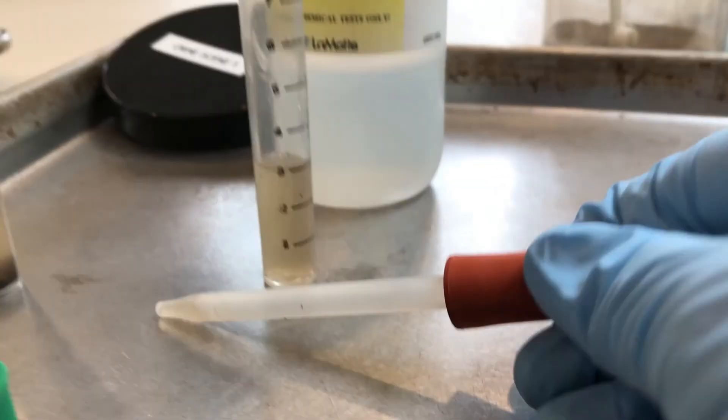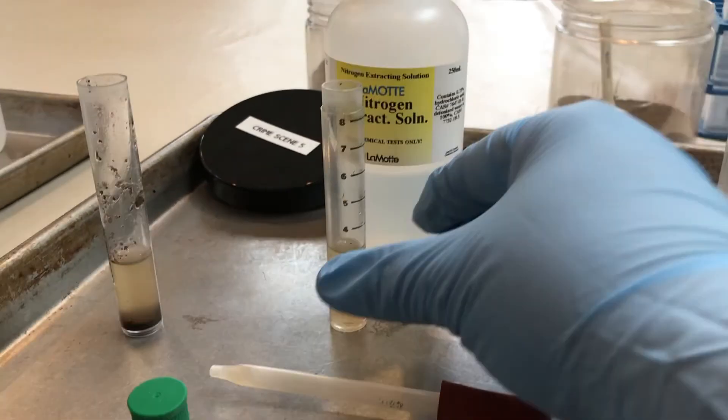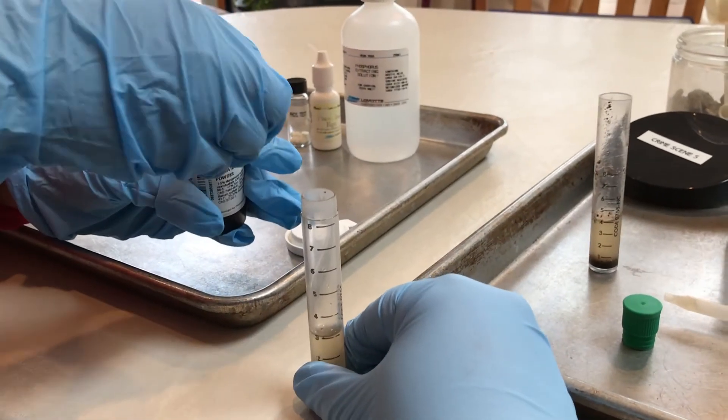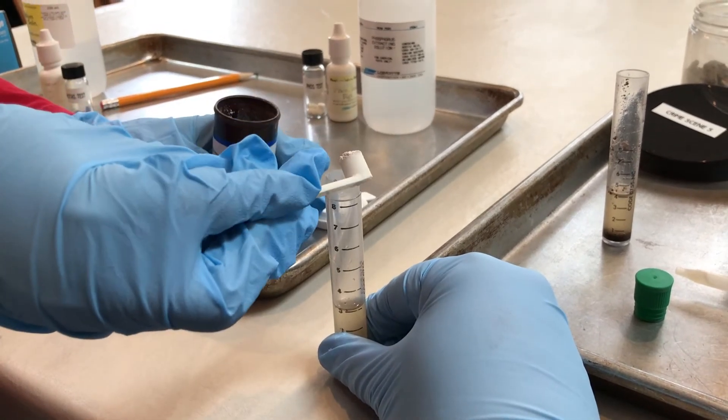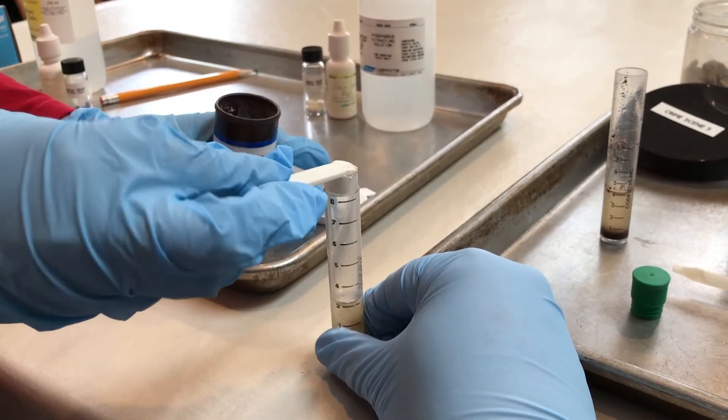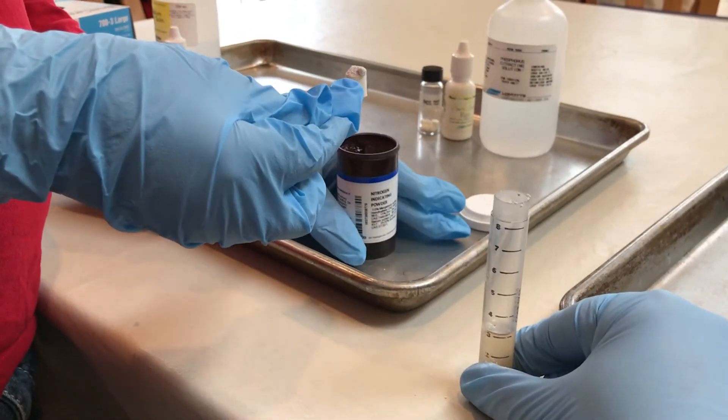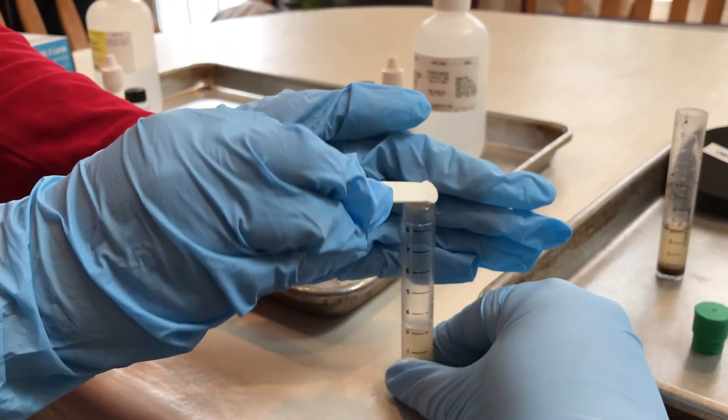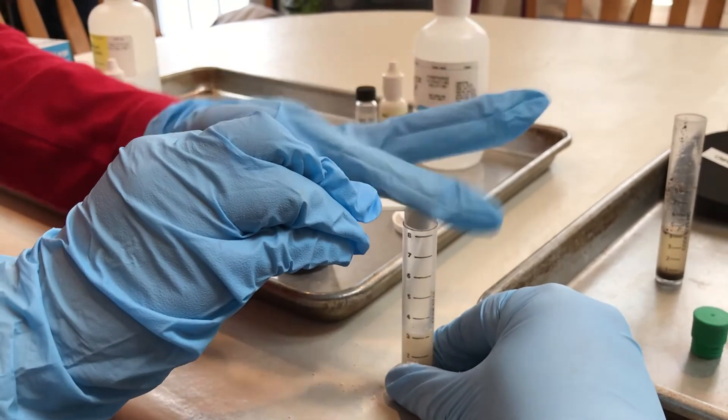Alright, so now that we've done that, Bridget is going to take our nitrogen indicator powder and add two scoops to our test tube. Going to make sure it gets all in there. Make sure you kind of tap it so it can get stuck in the bottom. There we go.